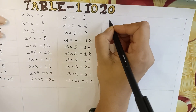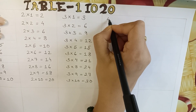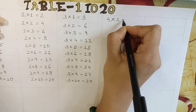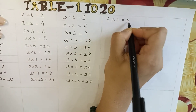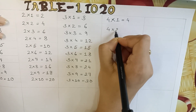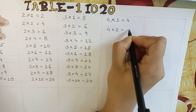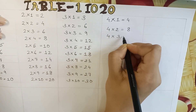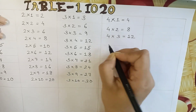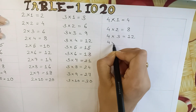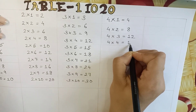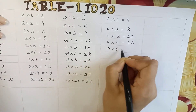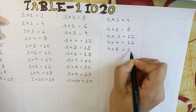Next, 4 table. 4 x 1 is equal to 4. 4 x 2 is equal to 8. 4 x 3 is equal to 12. 4 x 4 is equal to 16. 4 x 5 is equal to 20.